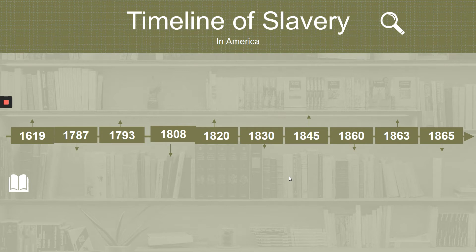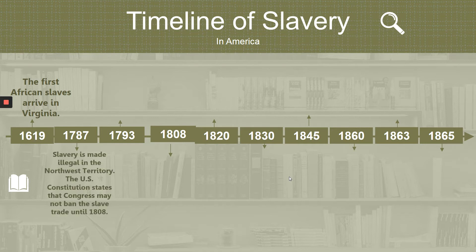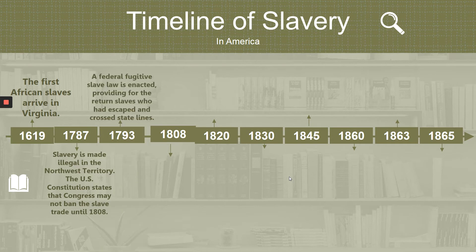Here we have a timeline of slavery in America. In 1619, the first African slaves arrived in Virginia. In 1787, slavery was made illegal in the Northwest Territory, and the US Constitution stated that Congress may not ban the slave trade until 1808. In 1793, a federal fugitive slave law was enacted, providing for the return of slaves who had escaped across state lines.